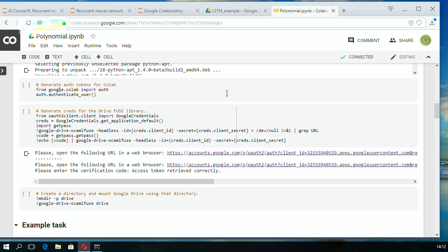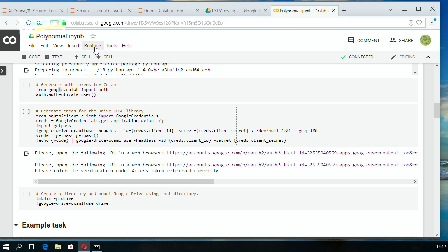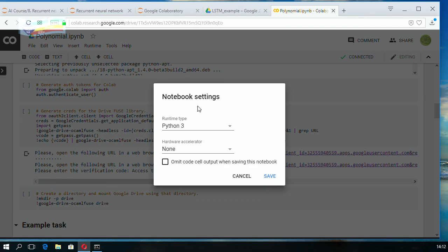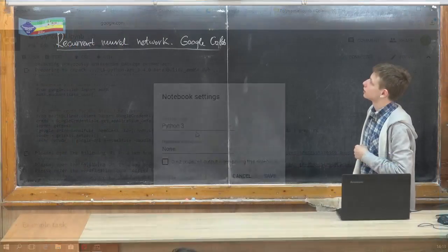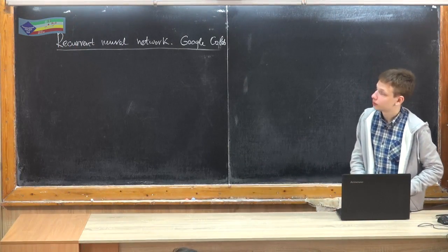You click runtime, change runtime type. Here you need to choose whether you use Python 2 or Python 3. We mainly use Python 3, so we're going to stick to Python 3. Then you need to choose hardware accelerator.